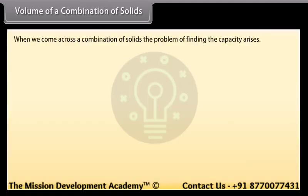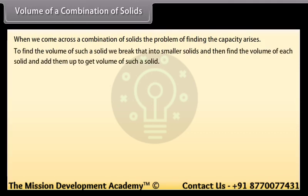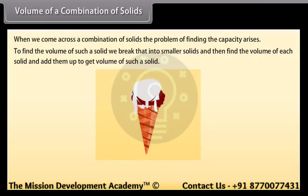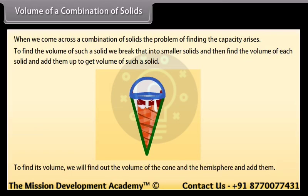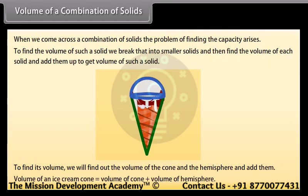When we come across a combination of solids, the problem of finding the capacity arises. To find the volume of such a solid, we break it into smaller solids, find the volume of each, and add them up. Look at this ice cream cone — it is a combination of a cone and a hemisphere. Volume of ice cream cone = volume of cone + volume of hemisphere.